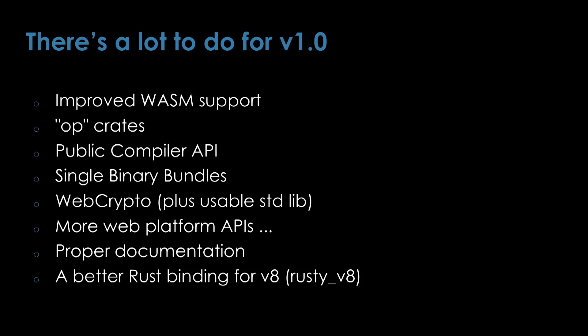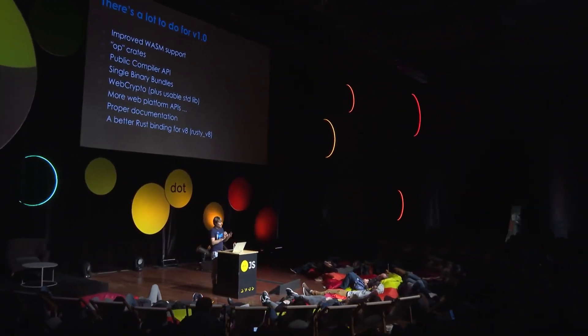So what are we trying to put in 1.0? We want to improve Wasm support so we can tell you clearly how to build and import WebAssembly — it works to some extent right now but the story is not end-to-end complete. We want to break Deno up into different crates — basically every single binding, like file open or fetch, in separate crates so you can really decide which ones you want. WebCrypto needs to be completed, documentation needs to be improved, and we're working on a better Rust binding for V8.